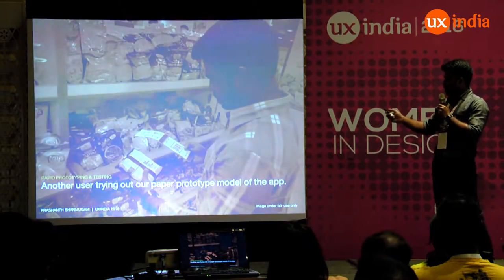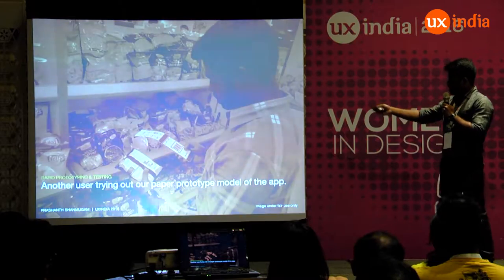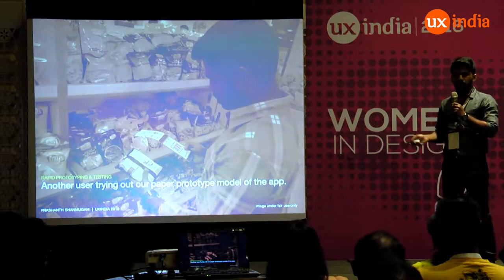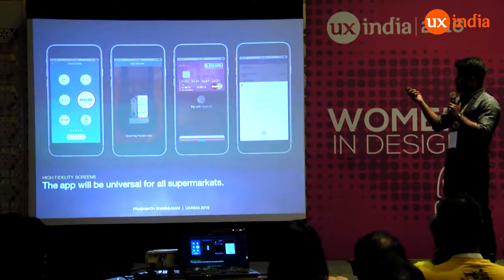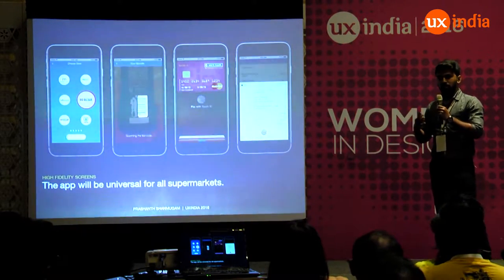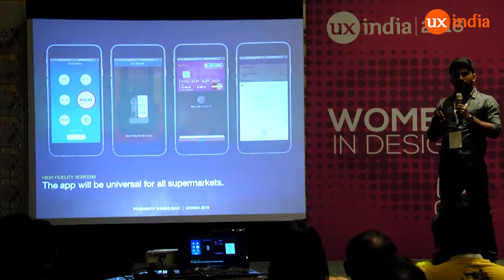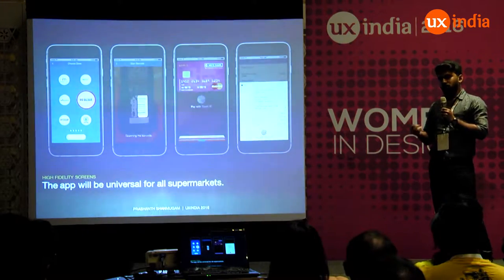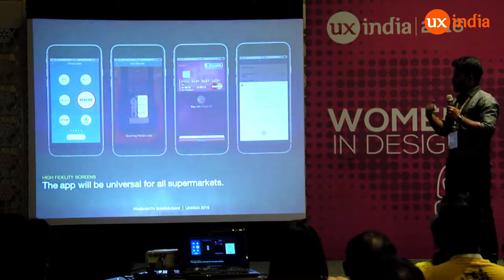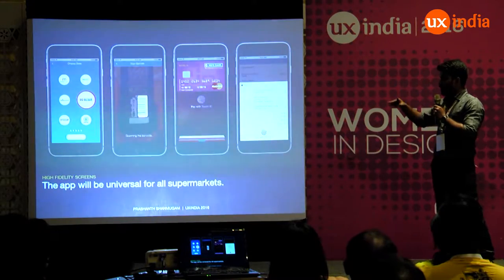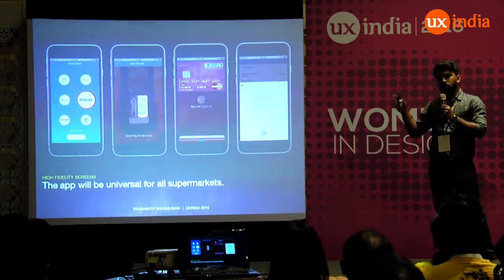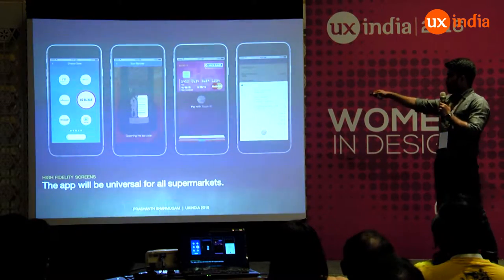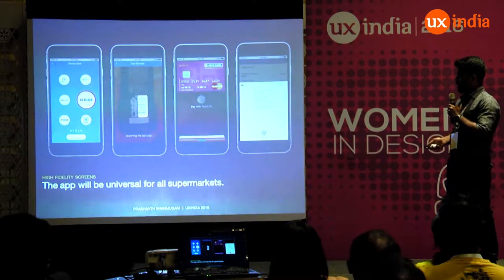We made a quick paper prototype and observed a user trying to use it in the supermarket. From feedback, people said: don't make a single app for a single supermarket. Instead, the user should be able to use the same app across every supermarket. When you enter a store, the app detects it and automatically connects to that store's inventory. You then scan barcodes, add items to the cart, and pay — a universal app.